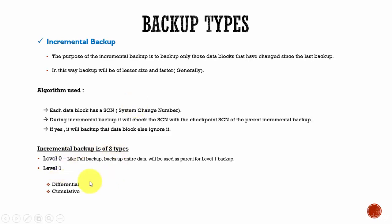In incremental backup, we have two types: level 0 and level 1. In level 1, we have differential incremental backup and cumulative incremental backup. The level 0 backup is similar to a full backup where it backs up all the data blocks which contain data, but this backup is marked as level 0 so that it can be used as a parent for the subsequent level 1 backups.